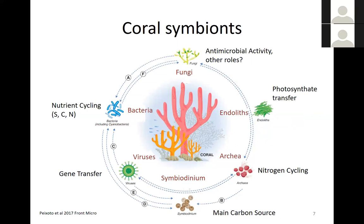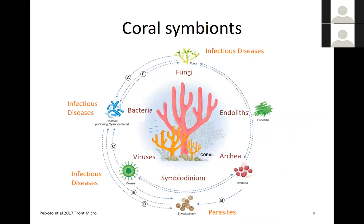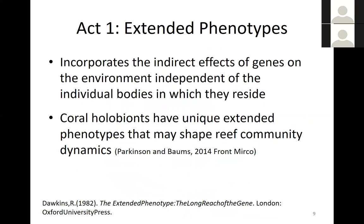It's not just Symbiodinium and bacteria in corals — there's also fungi, endolithic algae living in the coral skeleton, and archaea and viruses that all form this holobiont. Their roles are really diverse. For most of these members, we don't actually know what their roles are — they can range from antimicrobial activity, to nutrient cycling, to gene transfer roles that viruses might play. The host provides shelter and protection in return. These coral symbionts range from neutralists to commensals or parasites, and some groups are known to cause infectious diseases.